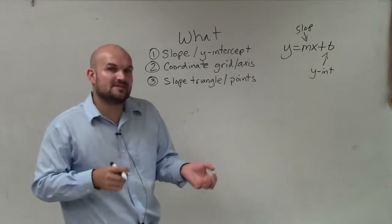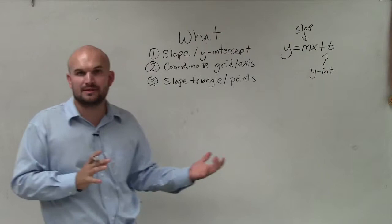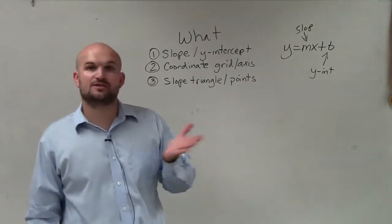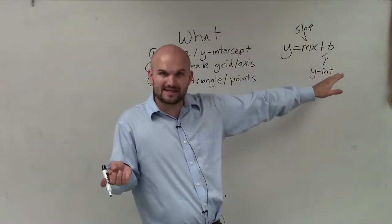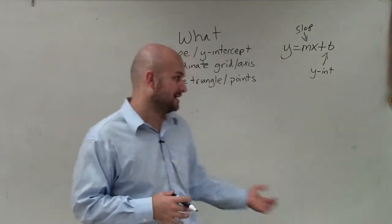Remember, the slope represents the change in the y-coordinates over the change in the x-coordinates between any two points on the line. The y-intercept represents where that graph crosses the y-axis. It's important to understand that the y-intercept is a point on the graph, while the slope represents a ratio between any two points on the line.